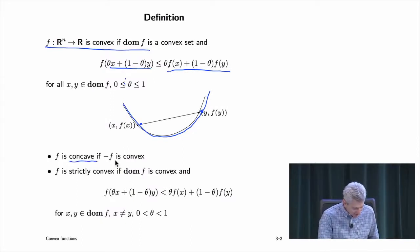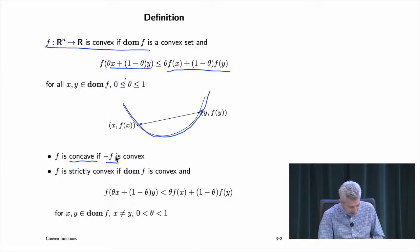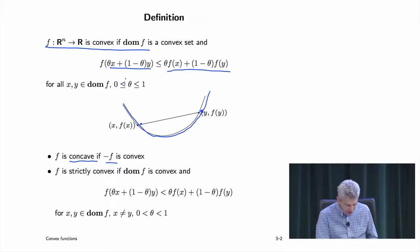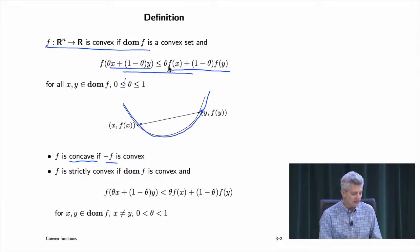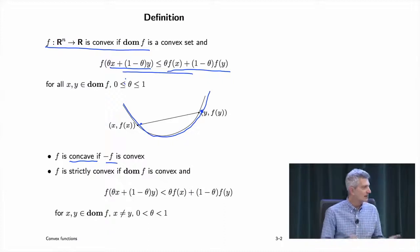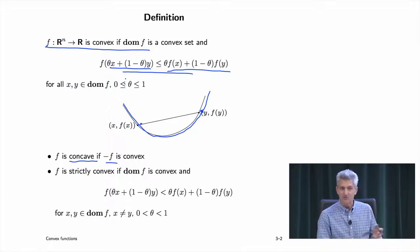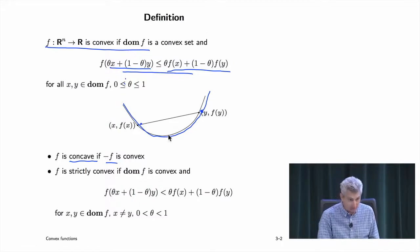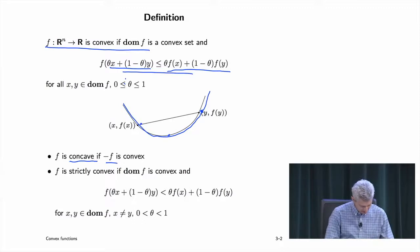A function is concave if minus f is convex. It's called strictly convex if it is convex and if the inequality holds strictly as long as theta is not 0 or 1. For theta in between, it holds strictly — meaning there's actually a gap between the function graph and the chord.